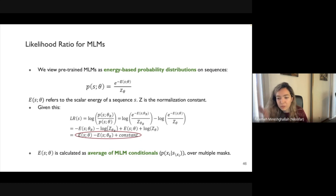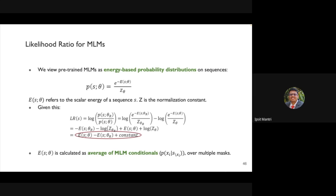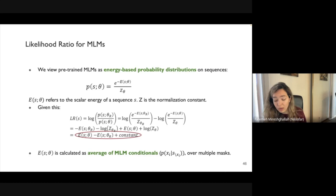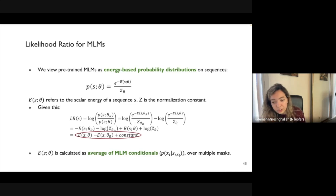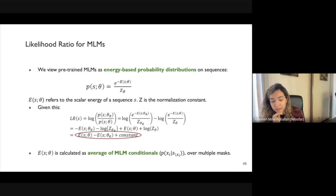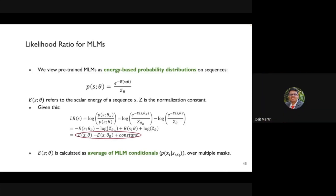Audience question: should the energy score be the conditional probability outputs rather than the loss? Answer: the average of MLM conditionals is technically the same as the BERT loss. We mask 15% of tokens, try to predict them, compute the loss, and do this multiple times to get a more accurate expected value estimate.